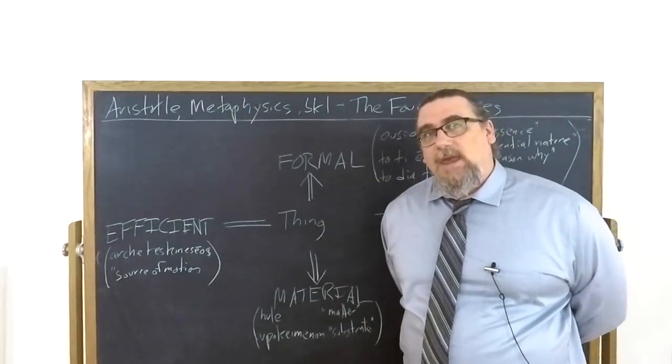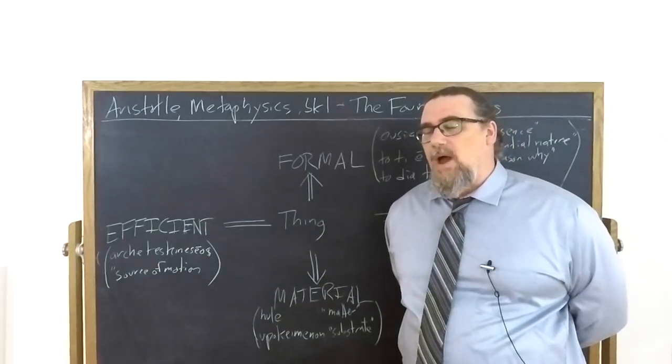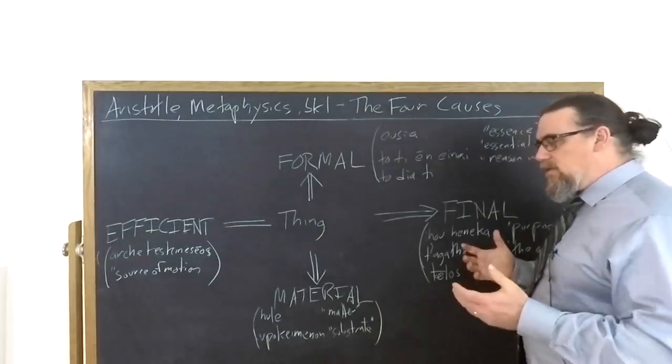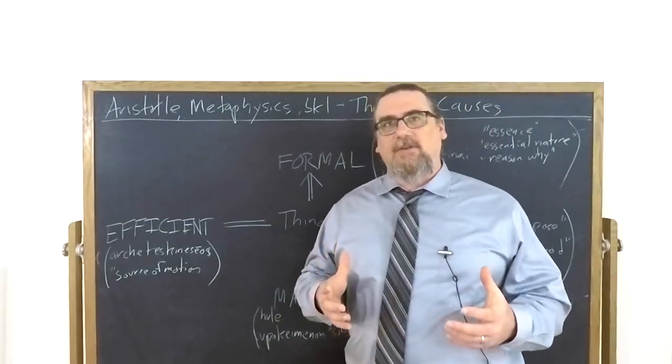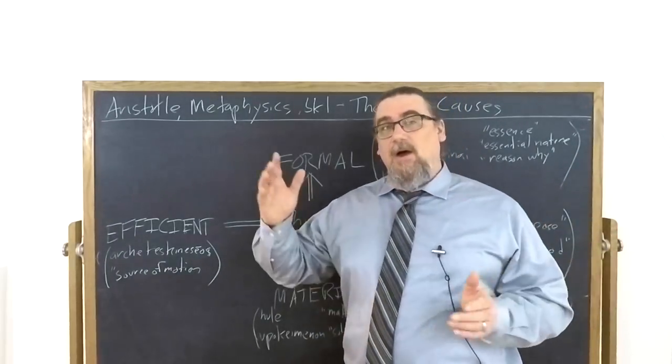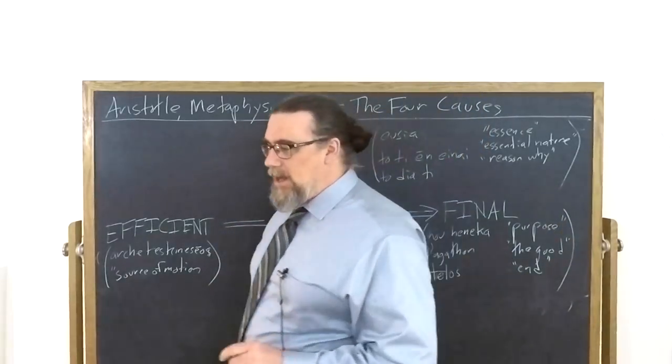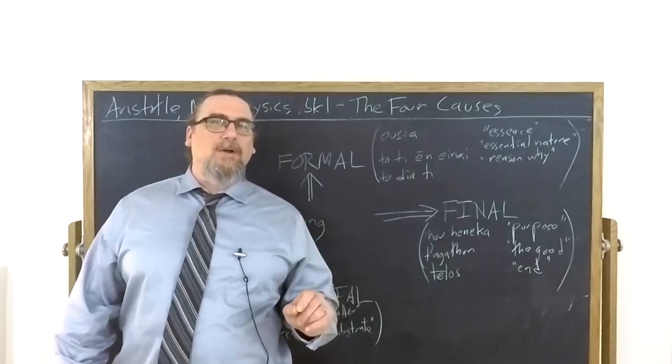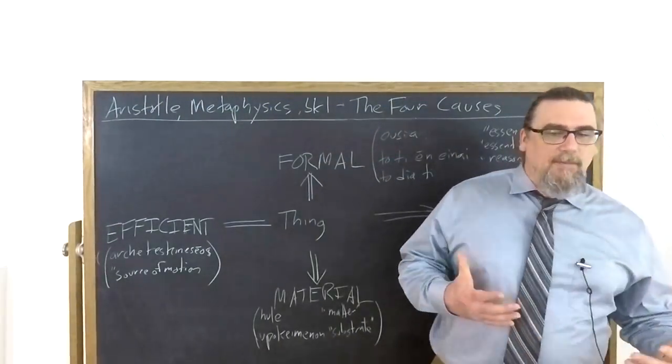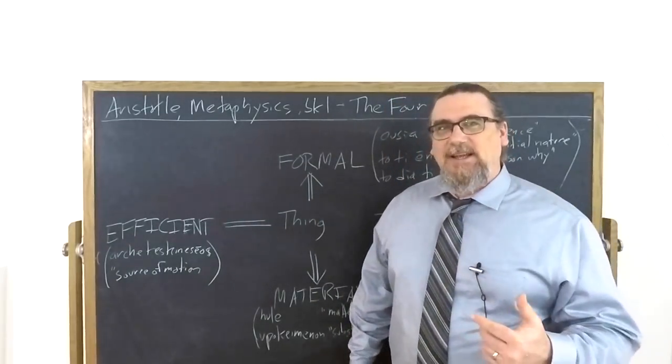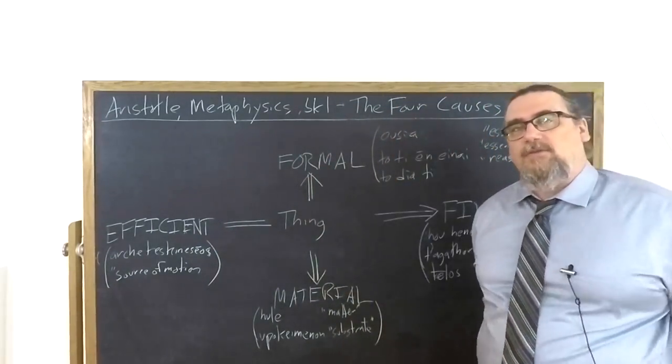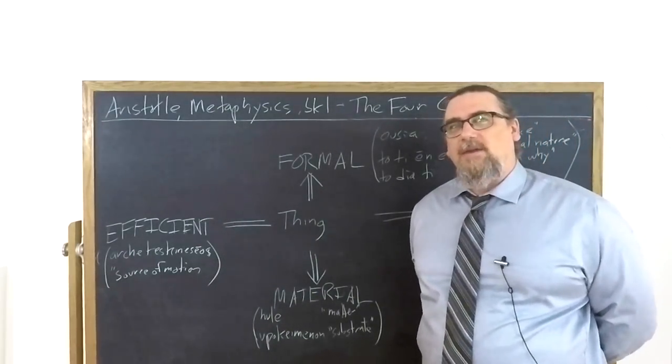In the metaphysics, he is not introducing an idea that's totally new for him because he references an earlier work, the physics, and says the four causes are laid out there. Why is he bringing up this notion then in the metaphysics? Because in his view, all of the predecessors from Thales all the way up to his teacher Plato and everybody in between failed to recognize the importance and distinctiveness of at least one of these causes. So they dealt with them, but sometimes in a less explicit, less articulate, less well thought out manner.